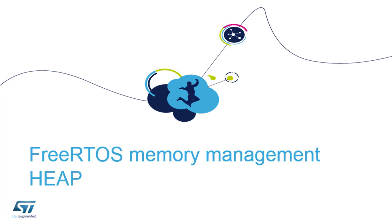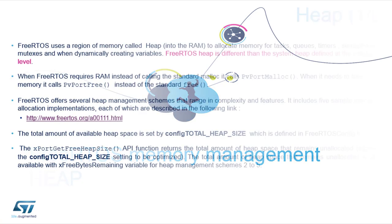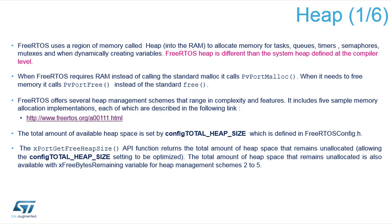Now we're getting to heap memory management and what heap to choose. There are actually five types of heap, each one providing different memory allocation and memory freeing schemes, which are usually completely different. For FreeRTOS, there is a specific memory area in which the heap exists.